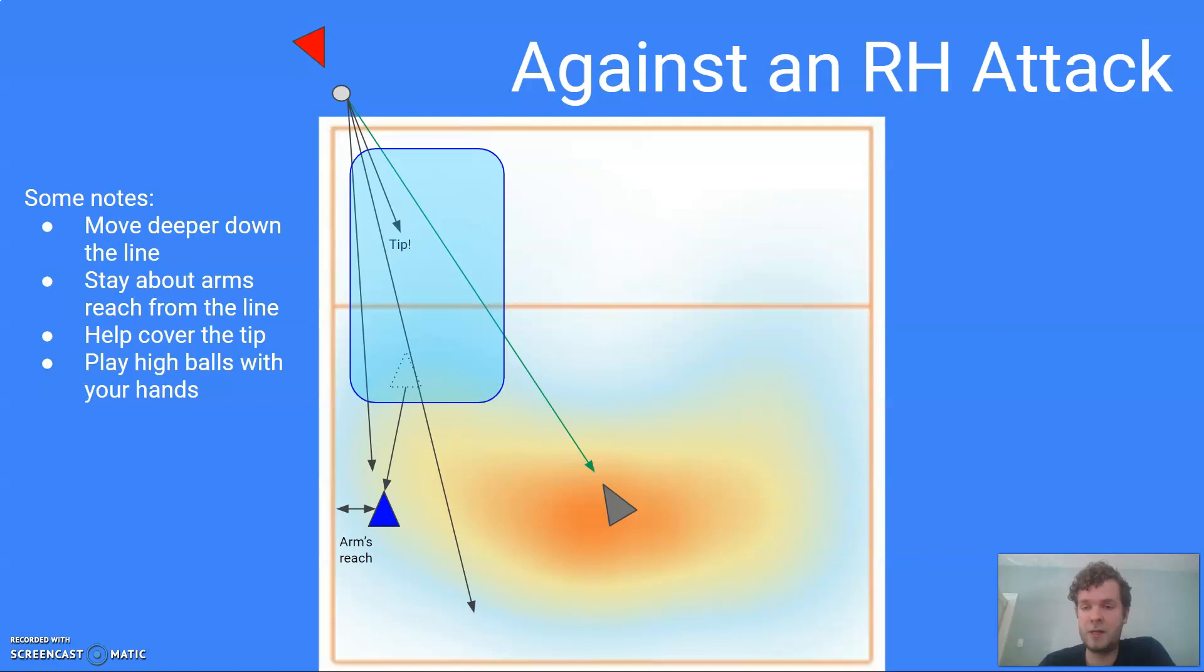Basically, you want to get from this dotted triangle, which is about that base position, we want to get off of that base position and get back probably halfway down the court if we can and be about arms reach from the line.